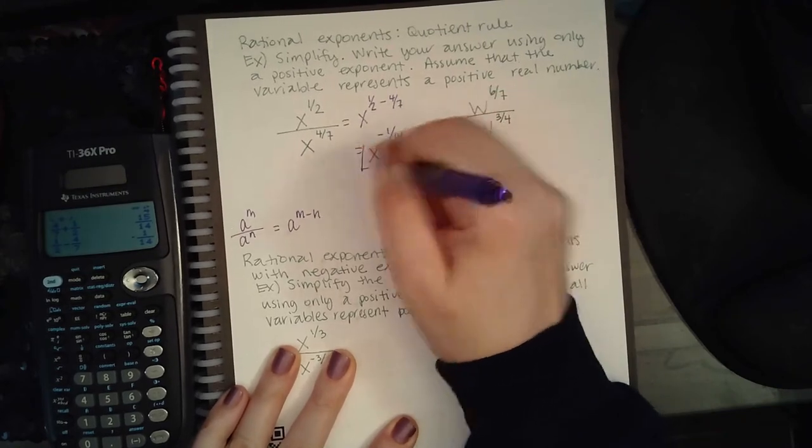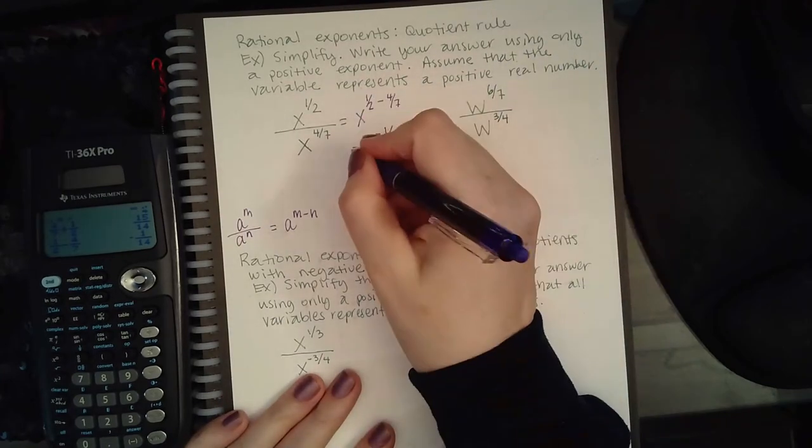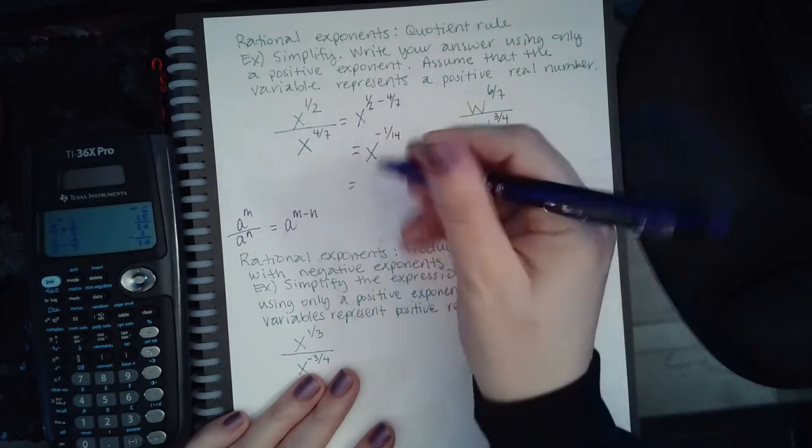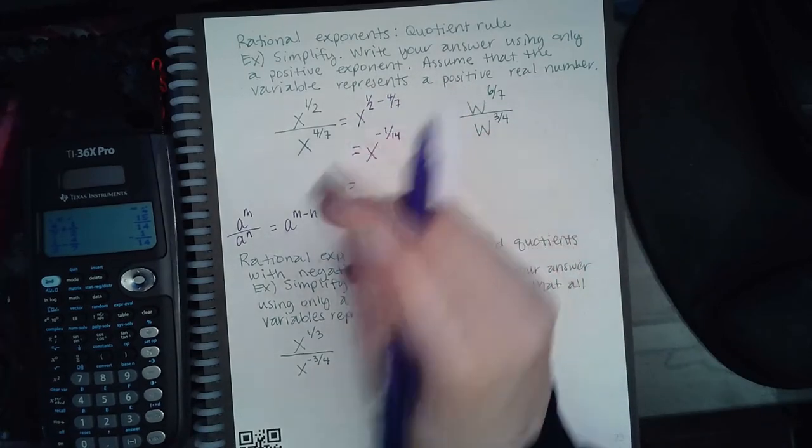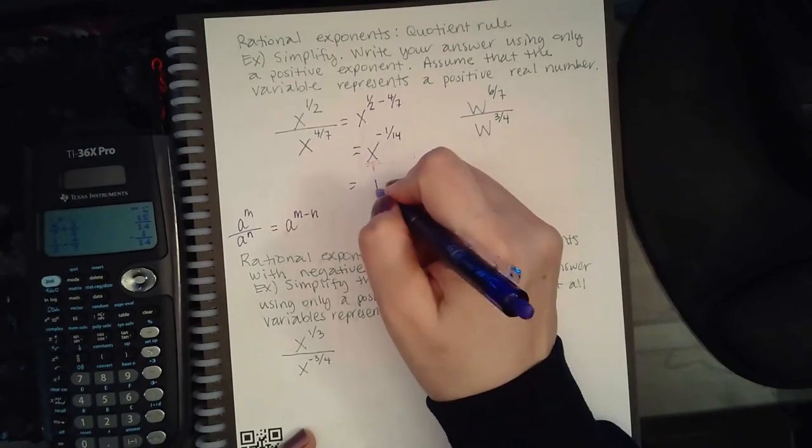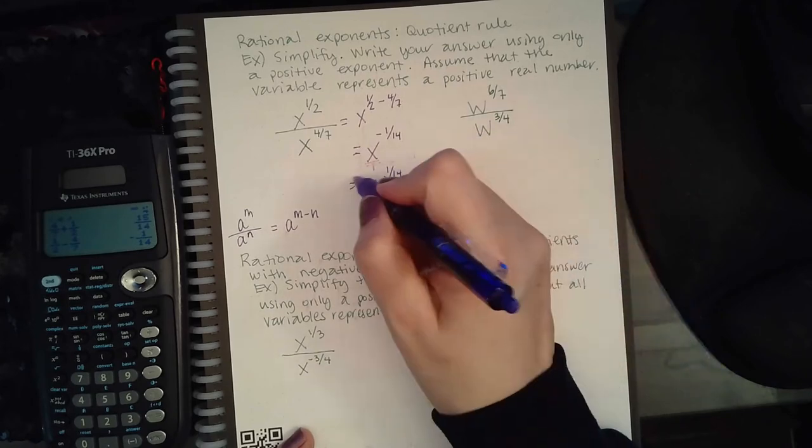Oh wait, maybe not. It says write your answer using only positive exponents. So I cannot box this because this is not my final answer since that is not a positive exponent. So let's go ahead and come in here and write that as a positive. So the negative, what does it do? It flips the fraction upside down.